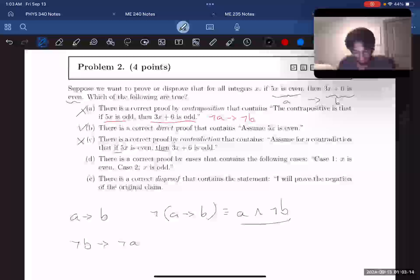For answer D, there's a correct proof by cases that contains the following cases. Case one, x is even. Case two, x is odd. With proofs by cases, the whole idea is that we have to cover the entire domain for what x could be. Since x is any integer, we know that x must either be even or odd. So if our two cases are being even and odd, that means we've covered all possibilities for what x could be. So this is correct.